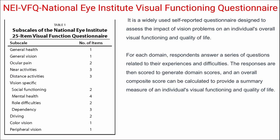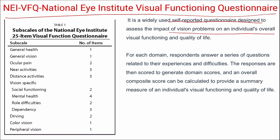Next is the National Eye Institute Visual Functioning Questionnaire (NEI VFQ-25) — a self-reported questionnaire assessing the impact of vision problems on an individual's overall visual functioning and quality of life. For each domain, respondents answer questions related to their experiences and difficulties. Responses are scored to generate domain scores, and an overall composite score can be calculated. It is a 25-item visual functions questionnaire.